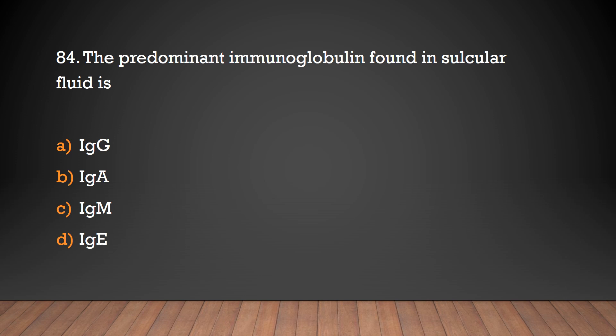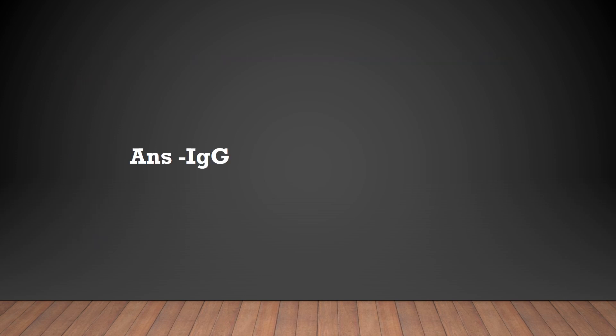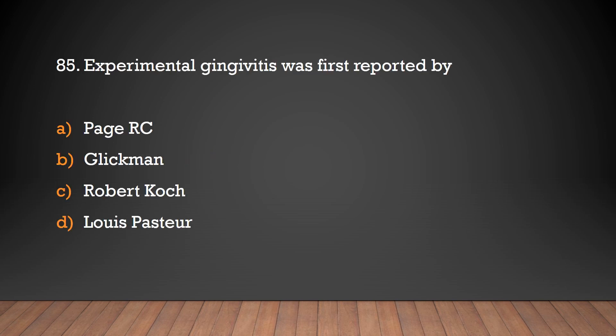The predominant immunoglobulin found in gingival crevicular fluid is: IgG, IgA, IgM, or IgE? IgG — immunoglobulin G is found in gingival crevicular fluid. Experimental gingivitis was first reported by Page RC, Glickman, Robert Gotch, or Lewis?